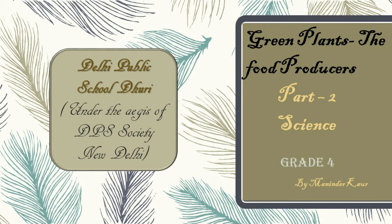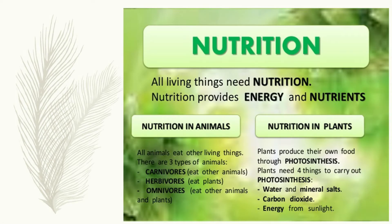Good morning students. Today in this class we will cover our pending concepts of the chapter on plants and food producers. There is one term used in this chapter — autotrophs — which is used for plants. Before going to explain this term, I would like to explain the process of nutrition and its types.